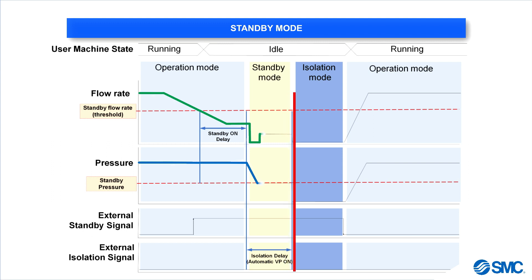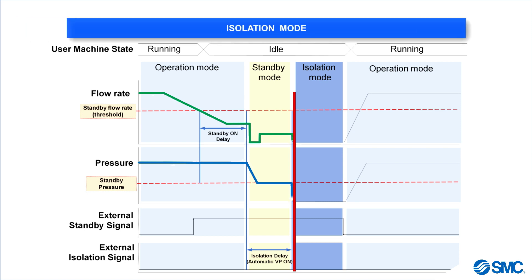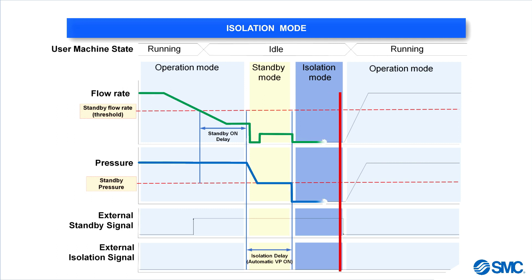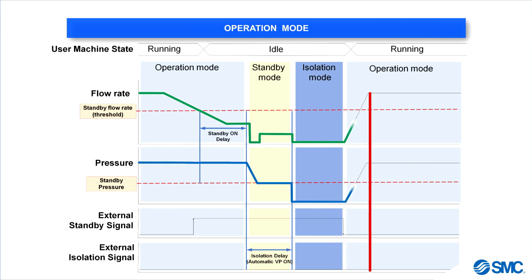Any leaks, open nozzles, or vacuum applications will consume less air due to the reduced pressure. If the system remains in standby mode longer than the isolation delay time period, the system can close the residual pressure relief valve, reducing leaks and air wastage even further. When the standby signal is reset to off, the system goes back to operation mode and increases pressure back to working pressure.